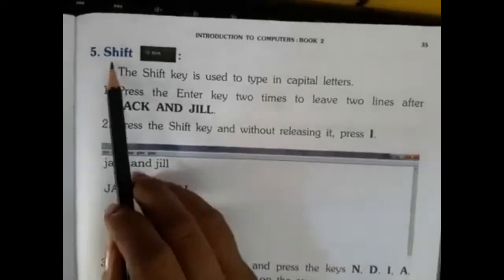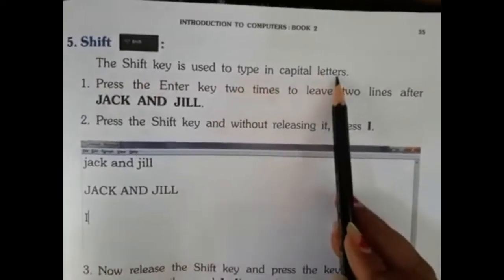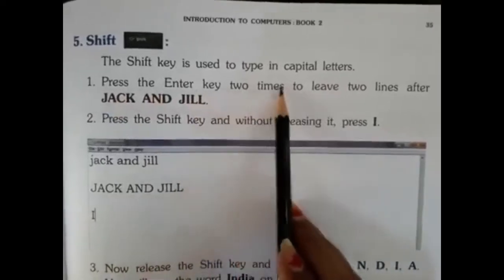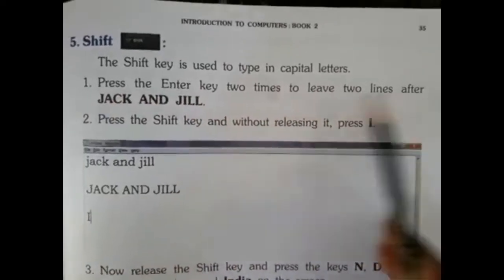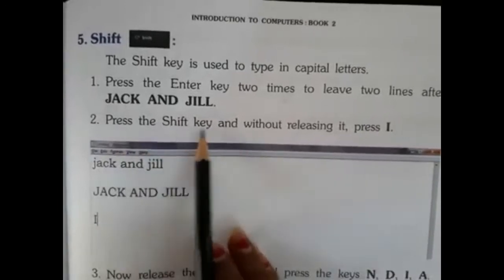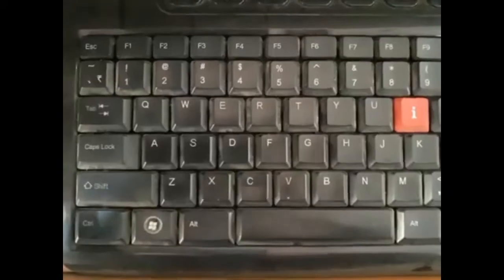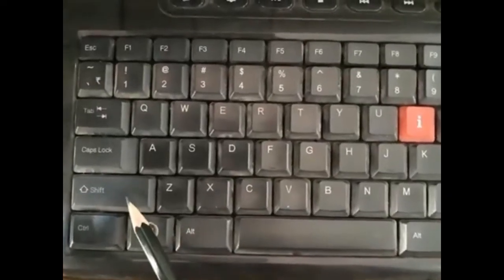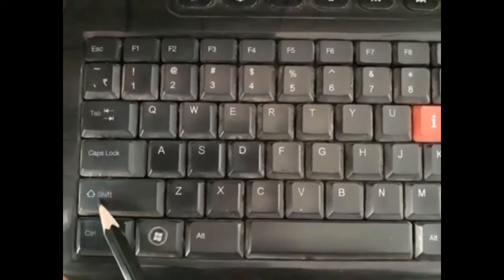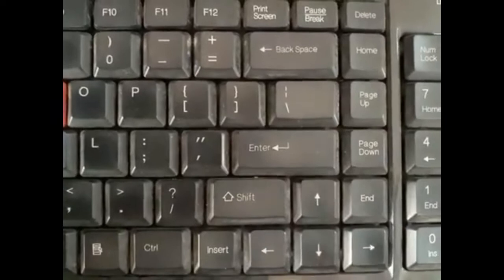Number five: the Shift key. The Shift key is used to type in capital letters. Step one: press the Enter key two times to leave two lines after 'Jack and Jill'. Step two: press the Shift key and without releasing it, press I. Keyboard ke upar do Shift keys hain — one on the left-hand side and one on the right-hand side.